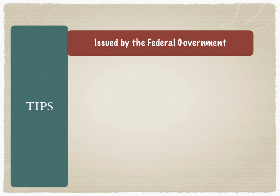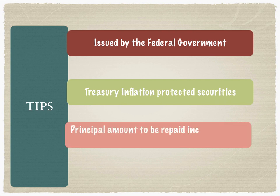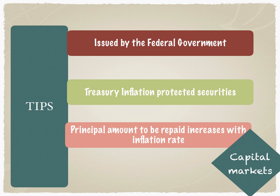Treasury Inflation Protected Securities, or TIPS, are issued by the federal government and protect the investor from increased inflation. As inflation increases, the real returns of the investor get reduced even though the nominal rate remains the same. To compensate for this, the principal amount is readjusted along with the CPI numbers announced as part of the weekly or fortnightly announcements made by the Federal Reserve. TIPS securities are also long-term in nature and are traded in the capital markets.